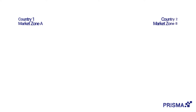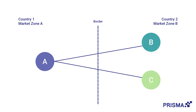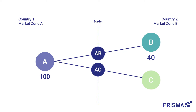Our initial situation is the same as in the introduction video. We have two bundles created from three points: AB and AC. The total capacity available at point A is 100, at point B is 40, and at point C is 90. This results in a competition for the 100 capacity on entry point A, the so-called competition constraint. Let's look at the individual auctions that will take place.